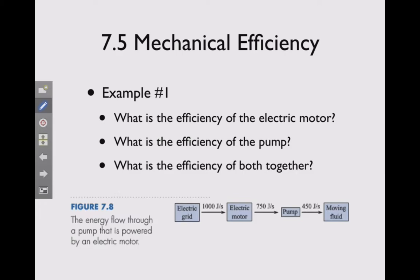So we can look at a couple of examples here. As done in the book, we can basically calculate the efficiency of the electric motor. We know that we have 1,000 watts or joules per second going into the electric motor, and that's the input, and we have 750 coming out. So we can calculate the efficiency.